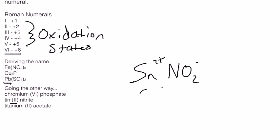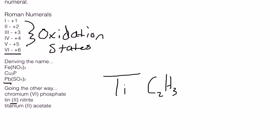And now our last one here. We have titanium II acetate. Titanium Ti and then acetate is going to be C2H3O2. And its oxidation state is at minus one.